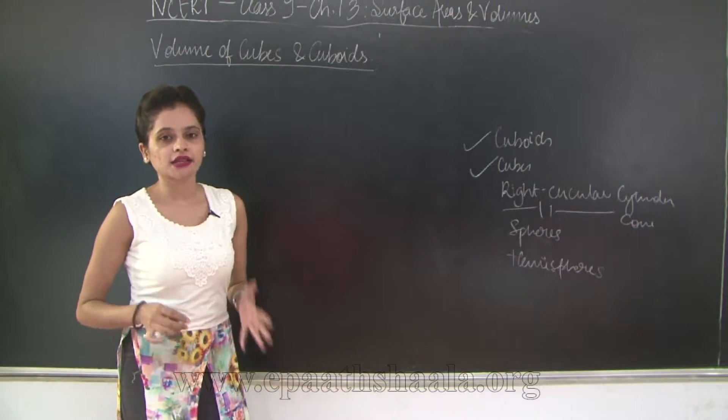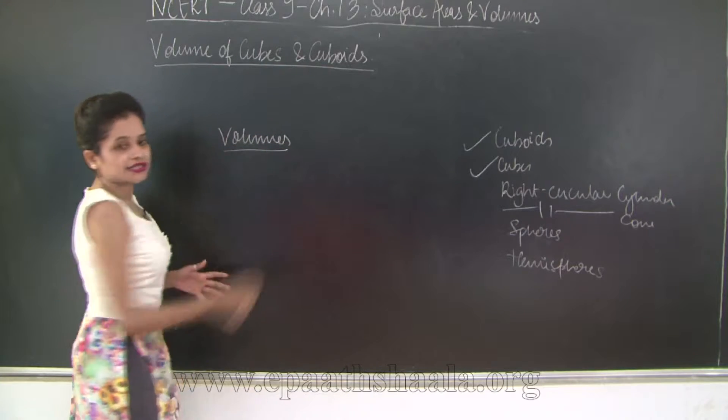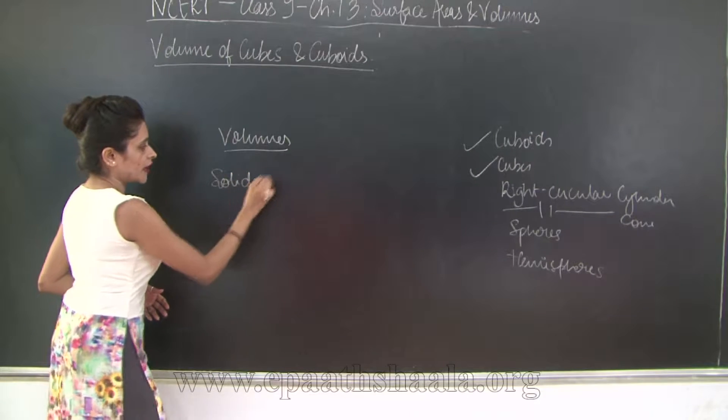So first of all let us understand the term what do you mean by volume. First of all there are two different types of objects, one is solid and one is hollow.